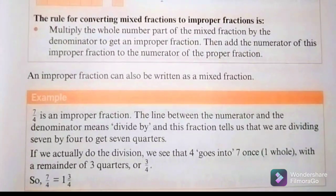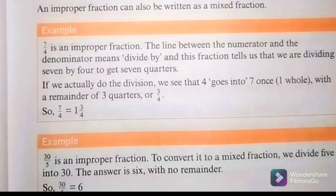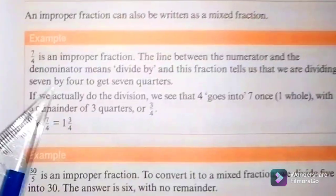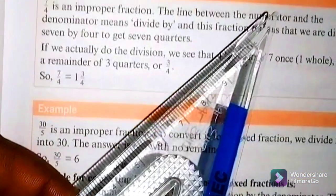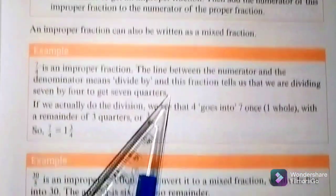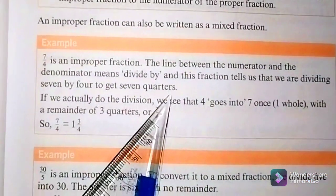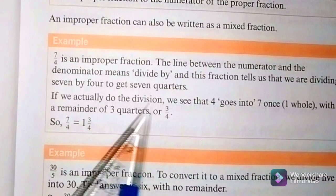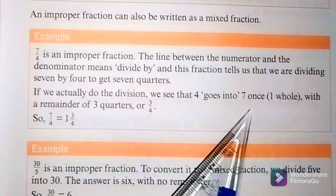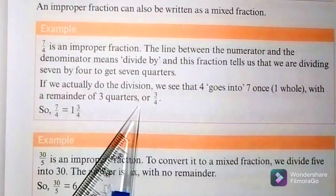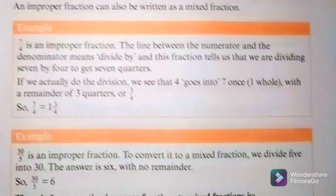An improper fraction can also be written as a mixed fraction. For example, 7 over 4 is an improper fraction. The line between the numerator and denominator means divide. This fraction tells us we are dividing 7 by 4. If we do the division, 4 goes into 7 once — giving one whole number — with a remainder of 3, so 7 over 4 equals 1 and 3 over 4.